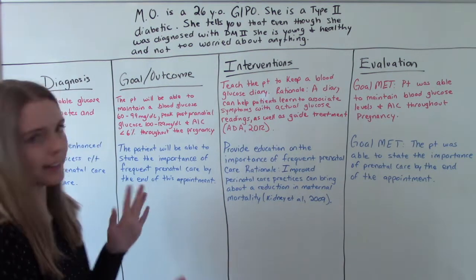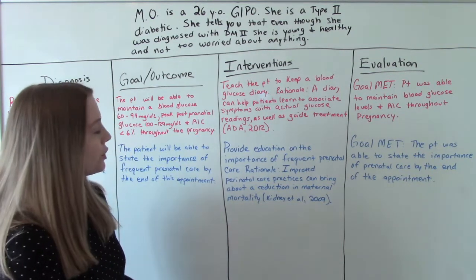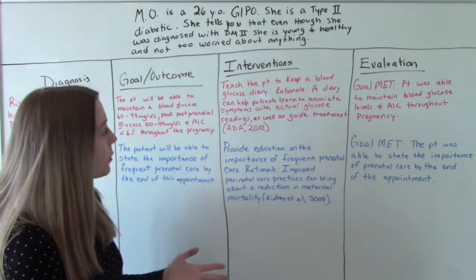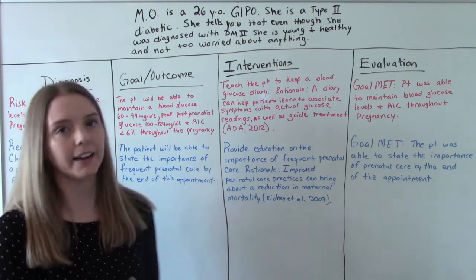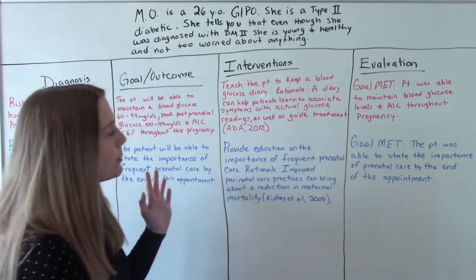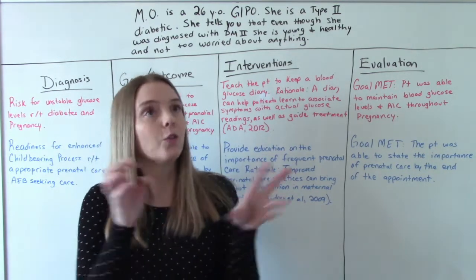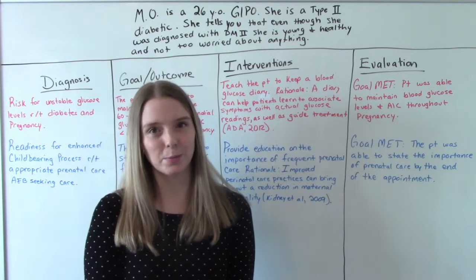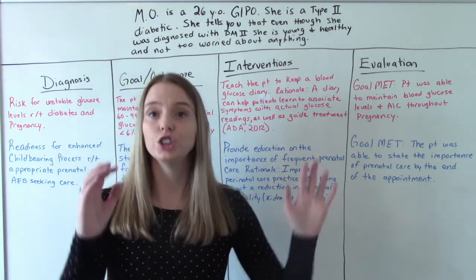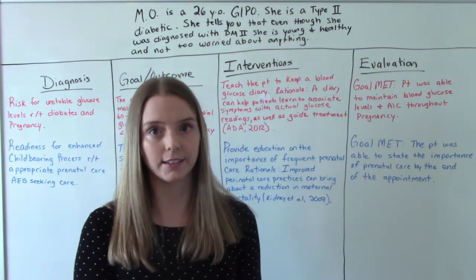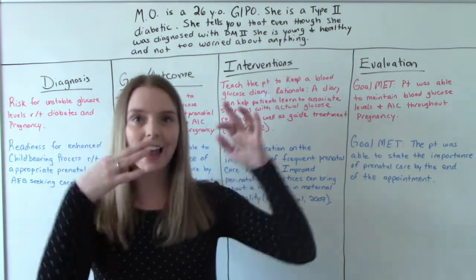Our intervention to make this happen: teach the patient to keep a blood glucose diary. Our rationale for choosing that — a diary can help patients learn to associate symptoms with actual glucose readings as well as guide treatment. She has type 2 diabetes but she's not super worried about it, and we don't want her to be overly anxious. We just want her to be responsible, because she is already considered a higher risk pregnancy with a comorbidity on top of the pregnancy. Getting it under control and knowing where her levels are at is going to help us help her.